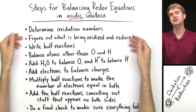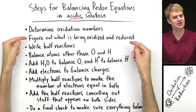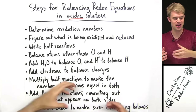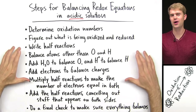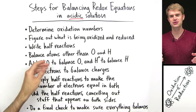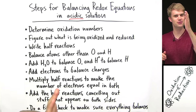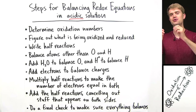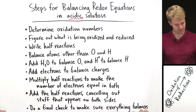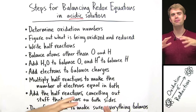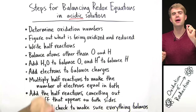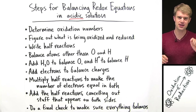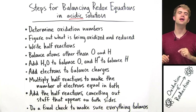We'll start out by determining the oxidation numbers of elements and looking at the oxidation number changes. Then we'll write half reactions for the oxidation and reduction. We'll balance each of these for atoms and charge. And finally, we'll put those half reactions together, making sure that the number of electrons is equal in both.